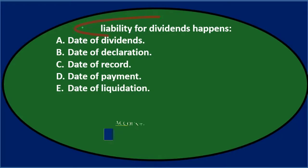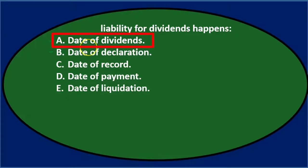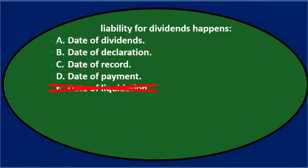Liability for dividends happens. A, date of dividends — I'll keep that for now. B, date of declaration — I'll keep that too. Actually from the last question, we can see that date of dividends isn't really a proper term — date of declaration is the proper term, not date of dividends, that's not really a thing. C says date of record — that is one of the three dates. D says date of payment — that is also one of the three dates. So I'll keep B, C, and D because those represent the three dates that have to do with dividends. E says date of liquidation — liquidation has nothing to do with dividends. So we're left with B, C, and D.